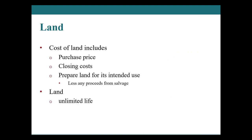Let's start looking at specific types of assets. The first is land. The cost of land includes purchase price, any closing costs such as title search and legal fees, additional costs to prepare the land for its intended use such as mowing or clearing, less any proceeds from the salvage of items on that land. Land has an unlimited life — therefore, we do not depreciate land. We never depreciate land.